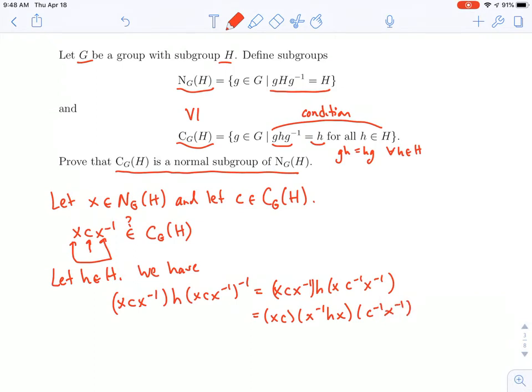Now, what do I know about this x inverse hx? Where did x come from? x came from the normalizer. Of course, if x is the normalizer, so is its inverse. So what I'm really doing here is taking this little h and conjugating it by x inverse. But x normalizes h. So whatever this element is, it's some element of h.